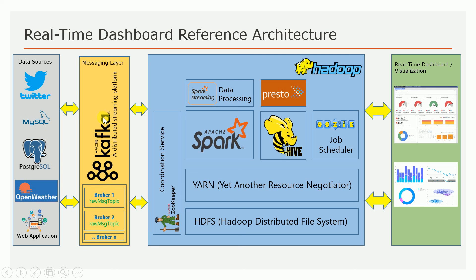The major messaging system I am using is the Kafka distributed messaging system. For people who are new to Kafka — Kafka is a distributed messaging system where people can write data or messages to a Kafka topic. A topic is a placeholder where the data resides. Consumers who want to consume the messages written in the topic can be a standalone consumer or a Spark Streaming application.